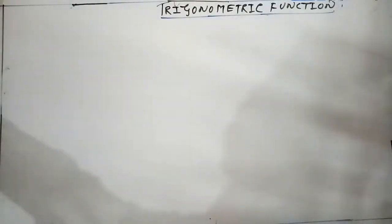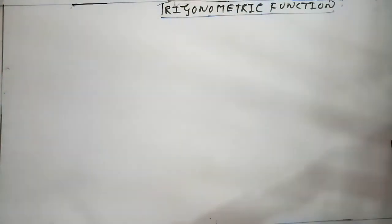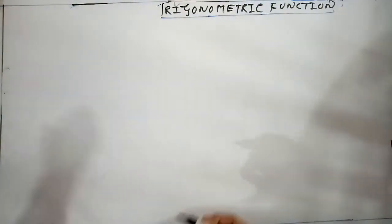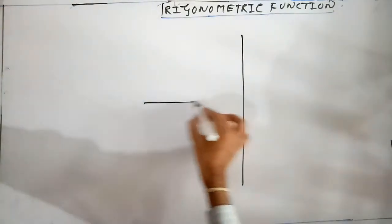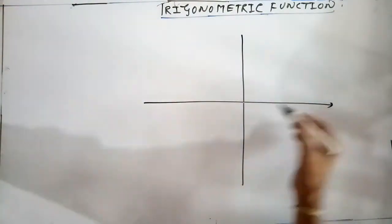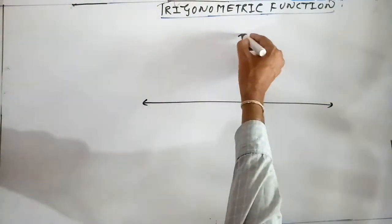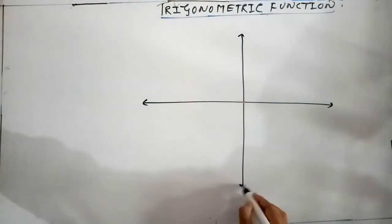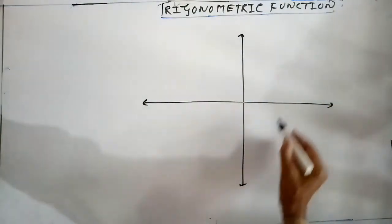In the last video we have seen the signs of trigonometric functions in different quadrants. I want to repeat them because they are very important. There are six kinds of trigonometric functions.